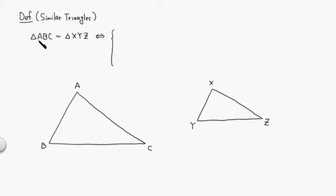We say triangle ABC is similar to triangle XYZ if all the corresponding angles are congruent, so angle A is congruent to angle X, angle B is congruent to angle Y, and angle C is congruent to angle Z.